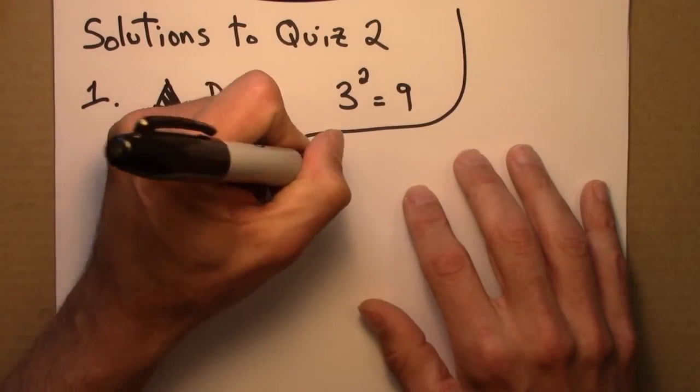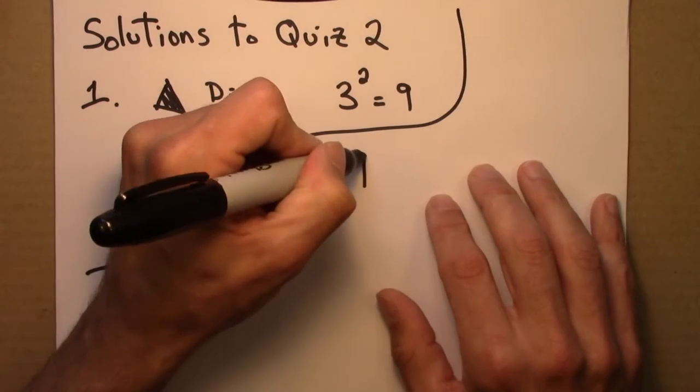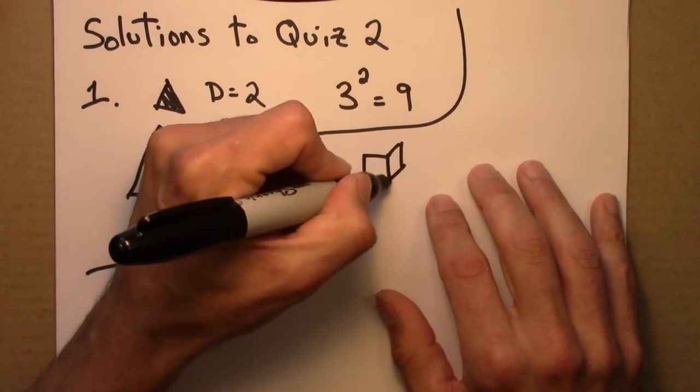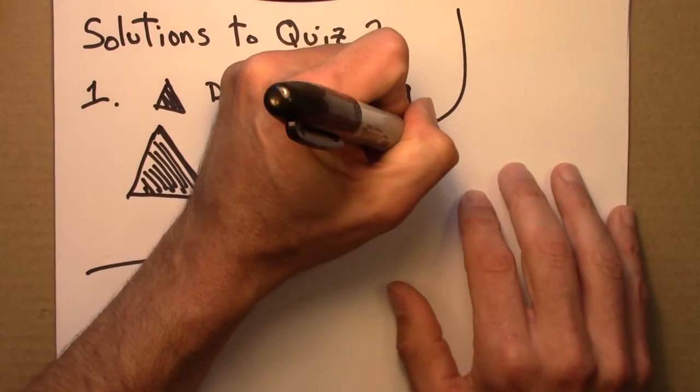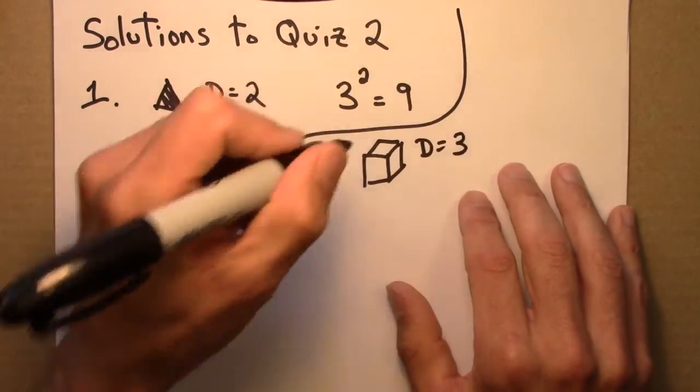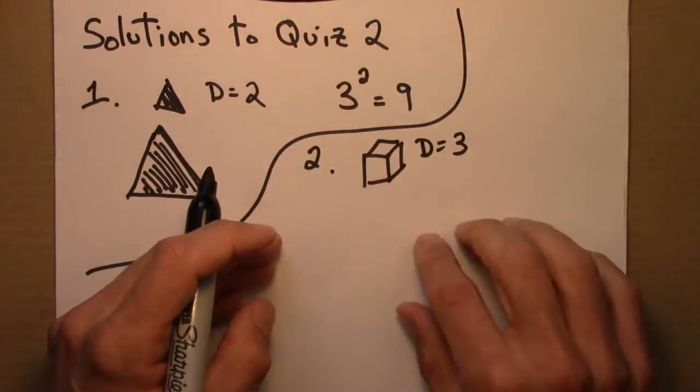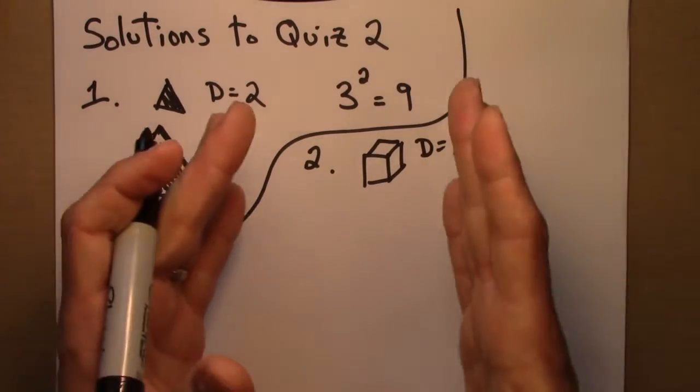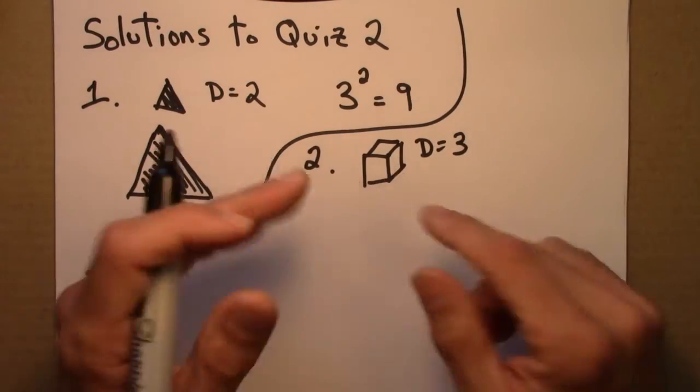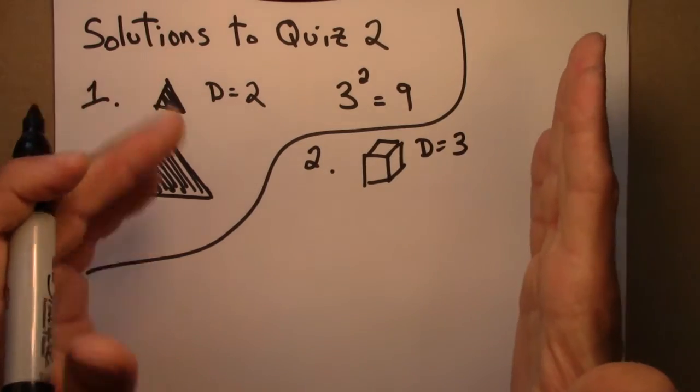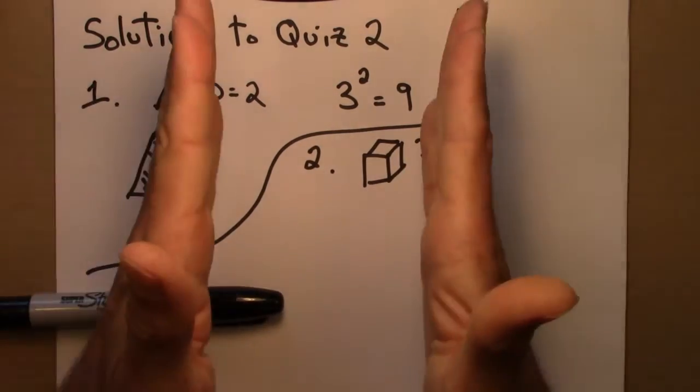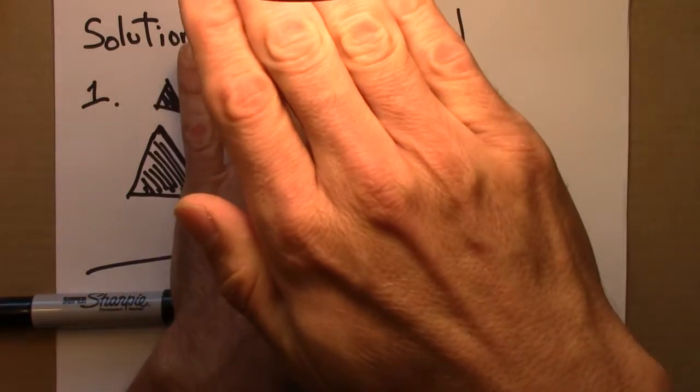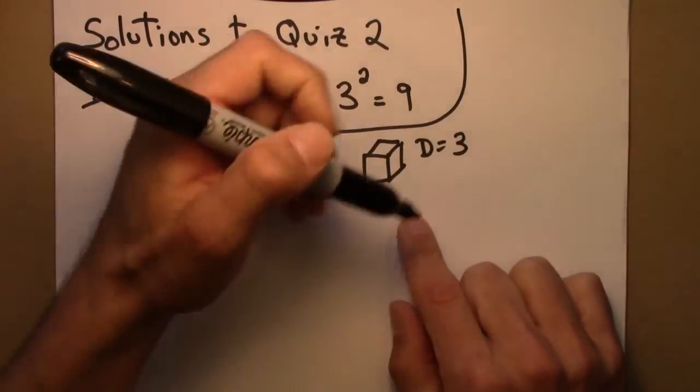Problem 2, now we're dealing with a cube. A cube has a dimension of 3. This time the scaling factor is less than 1, so we're shrinking it down. We took a cube and shrunk it down by a factor of 3 this way, a factor of 3 this way, and a factor of 3 that way. What happens?